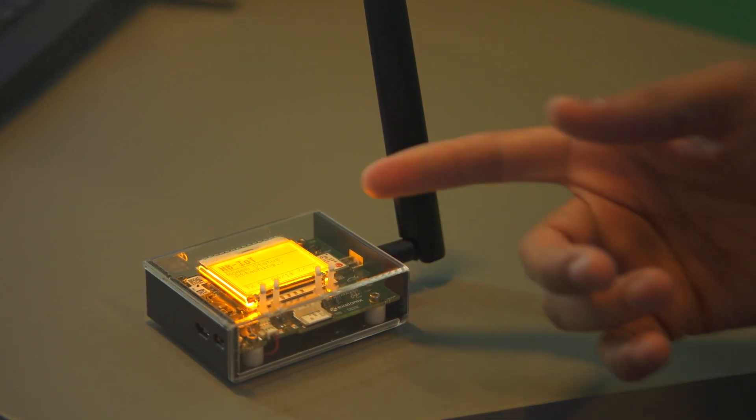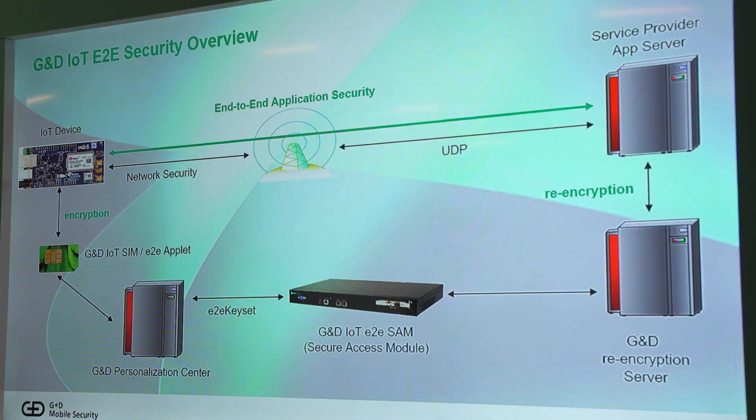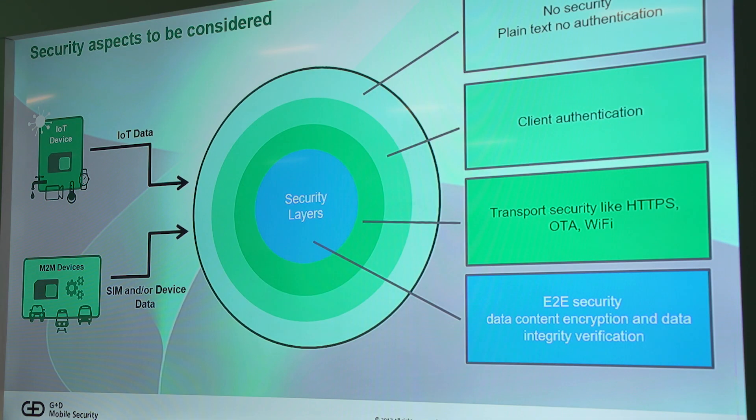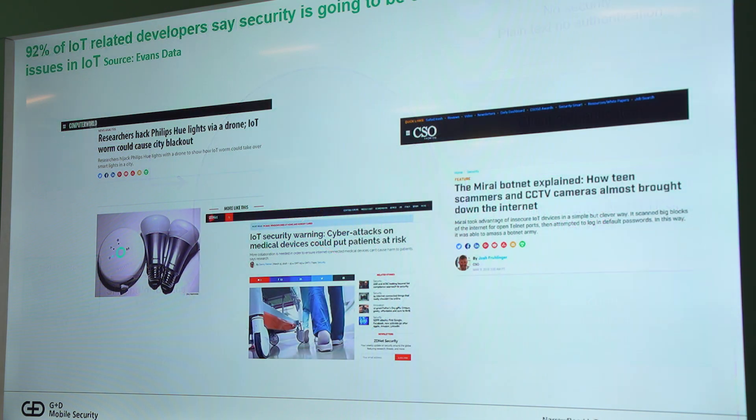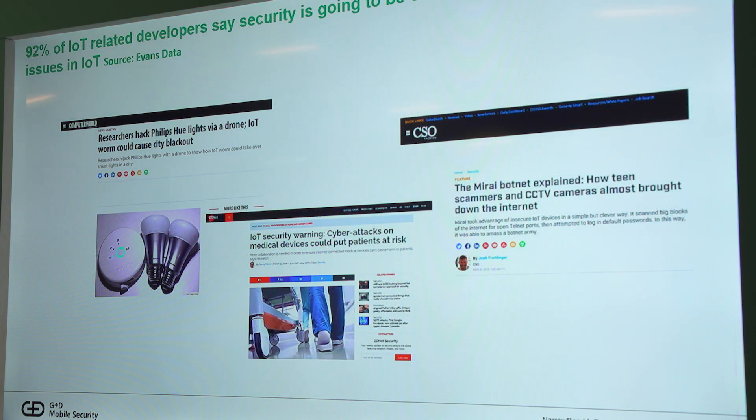Here we have a scalable technology that is literally plug-and-play. Using the SIM card that is already necessary to be connected to a narrowband IoT network, you can enable end-to-end security services. So if you're an enterprise creating an IoT system or an IoT device, you don't necessarily have to worry about security, because when you plug in your SIM card to get connectivity onto the network, using the same SIM technology, we can enable these additional end-to-end security services.